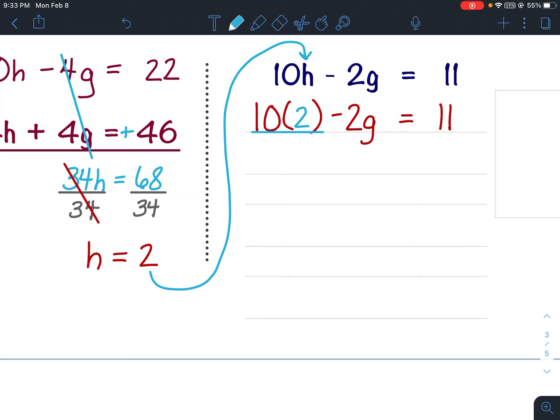Okay, 10 times 2 is 20. Bring down the negative 2g, the equal sign, the 11.